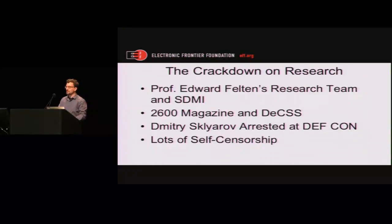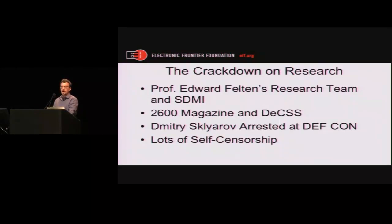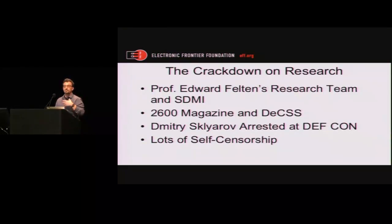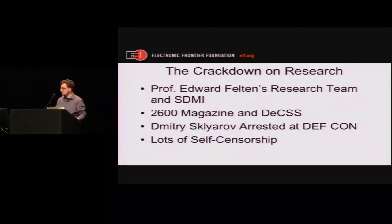The 2600 Magazine lawsuits: 2600 Magazine published the algorithm for decrypting DVDs — one that had been independently developed. They were sued, and at the conclusion of that lawsuit, they were banned from ever publishing this algorithm or linking to any website that published it. This really gets at the heart of a restriction on speech of the sort that US law is very allergic to. This is a magazine — this is journalism — and that magazine is forever banned from giving true information about a subject very important to the public. That's a restriction on the free press.